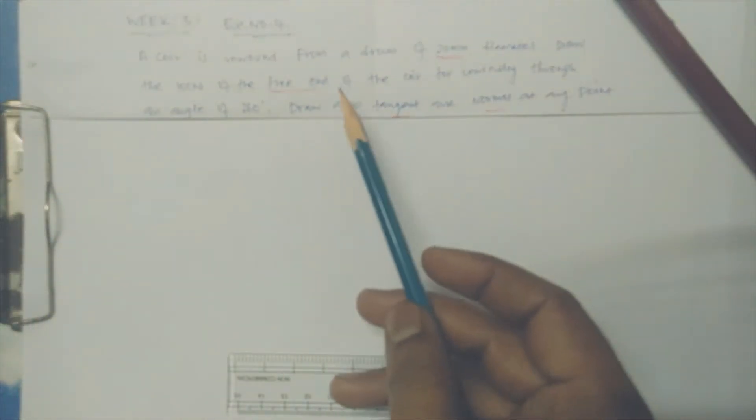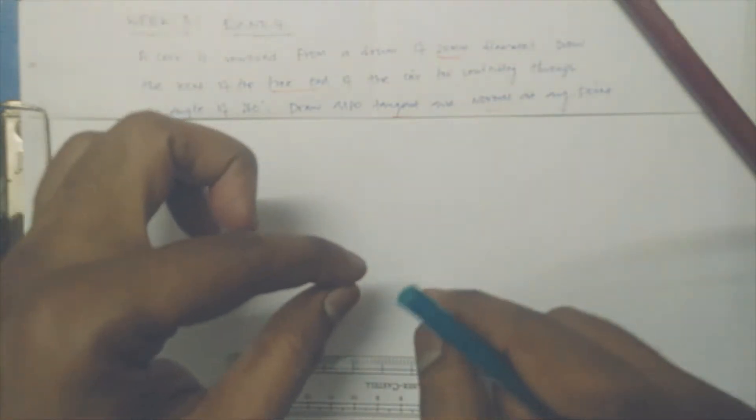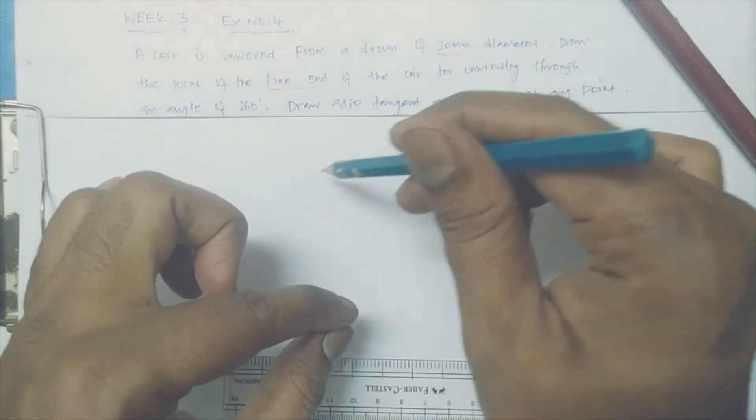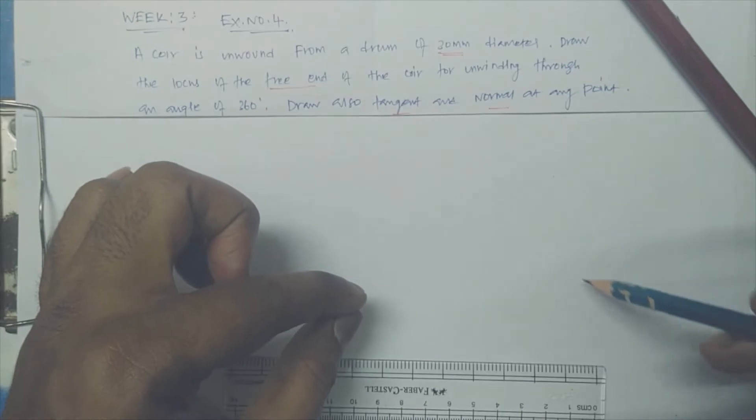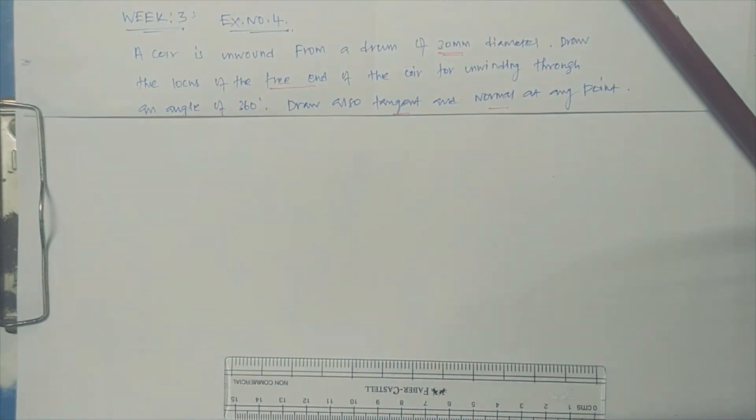This is the question. It's nothing but if there is some rounded profile and you are unwinding the wire, we are going to find the path that the coir will follow.